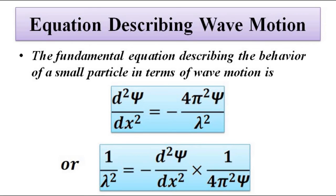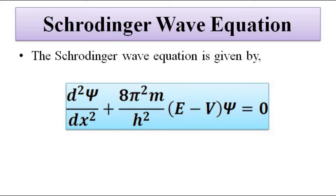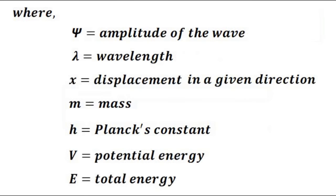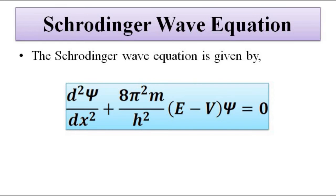This is all described by Schrödinger's equation, which describes wave motion. This fundamental equation describes the behavior of a small particle — in this case, the electron — in terms of its wave motion. The equation involves the double derivative of the wave function Psi: d²ψ/dx² = −4π²ψ/λ². The final form of Schrödinger's wave equation is: d²ψ/dx² + (8π²m/h²)(E − V)ψ = 0, where ψ is the amplitude of the wave, λ is the wavelength, h is Planck's constant, m is mass, E is the total energy (kinetic plus potential energy), and V is the potential energy.